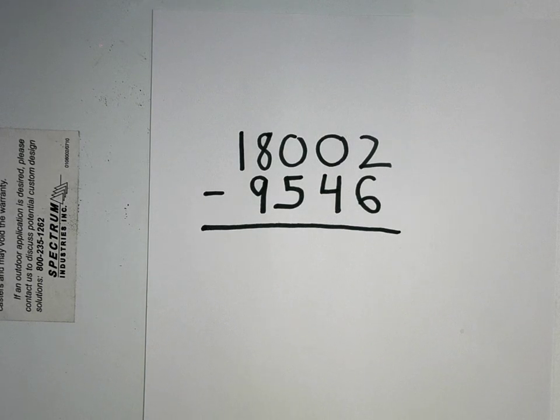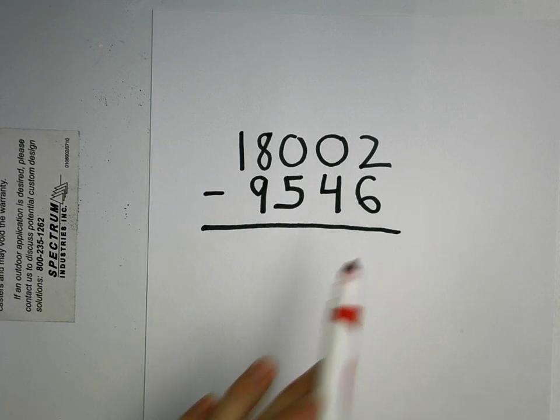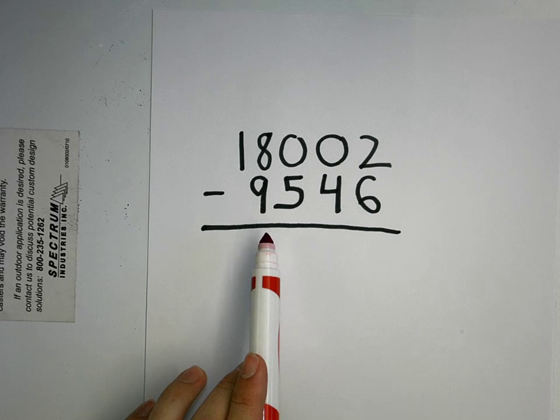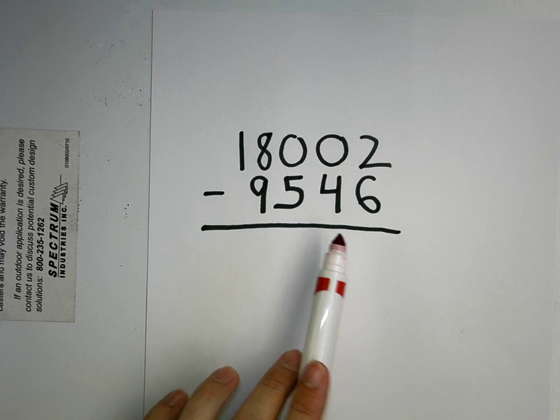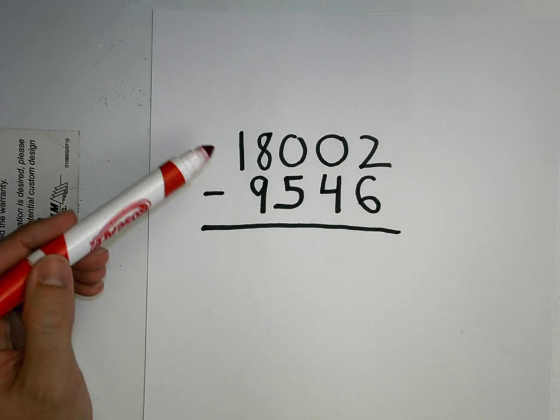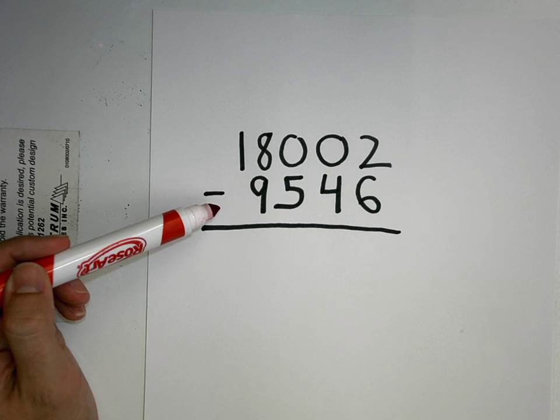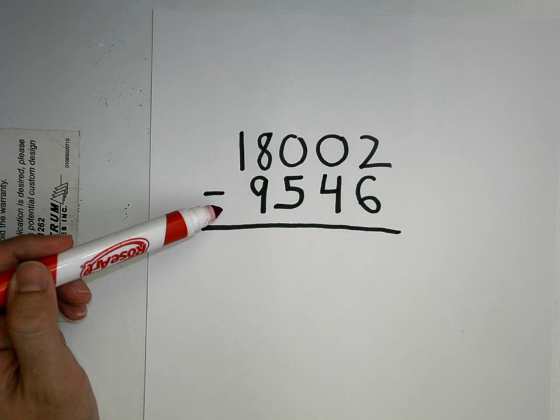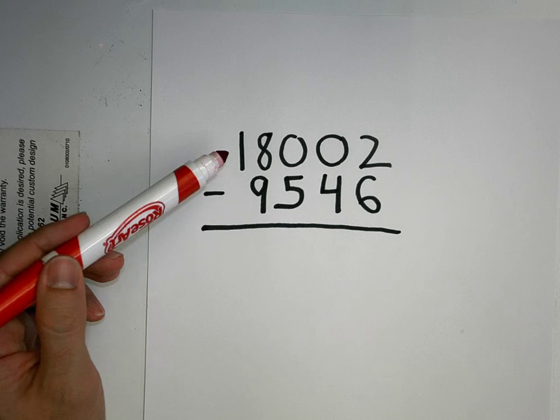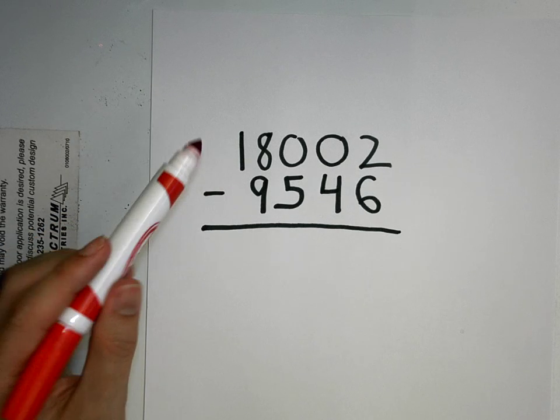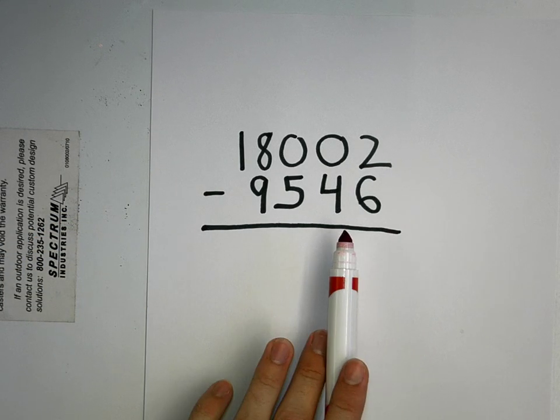Now we have an even bigger number: 18,002 take away 9,546. Now this top number is bigger than the bottom number, so I know that my subtraction sentence is set up the right way, because you always start with the biggest number. But when you look at the individual digits in the ones, tens...